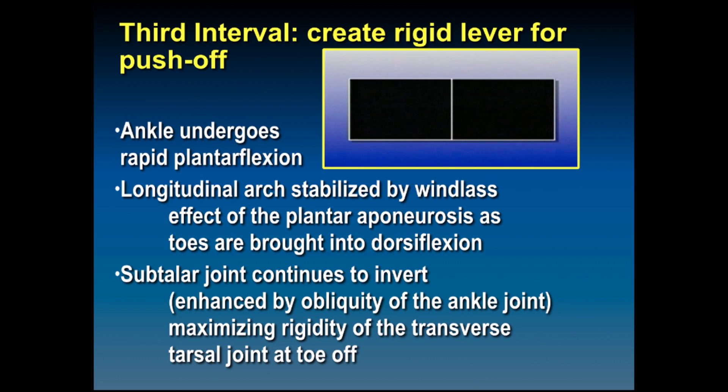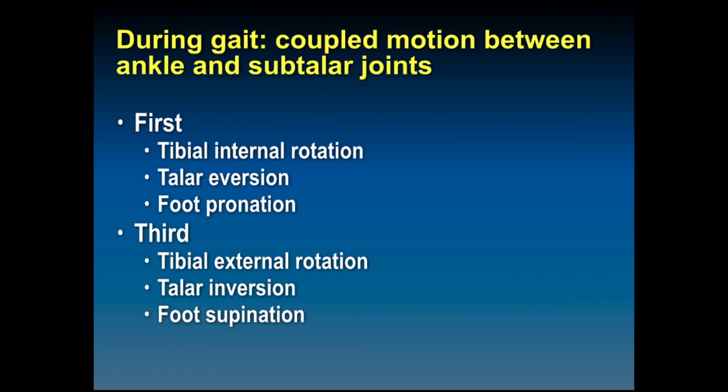During gait, coupled motions occur between the ankle and subtalar joints. In the first interval, the tibia internally rotates, the talus everts, and the foot goes into pronation. In the third interval, the tibia externally rotates, the talus inverts, and the foot supinates. The joints must act as flexible joints and then be rigid during parts of the gait cycle.